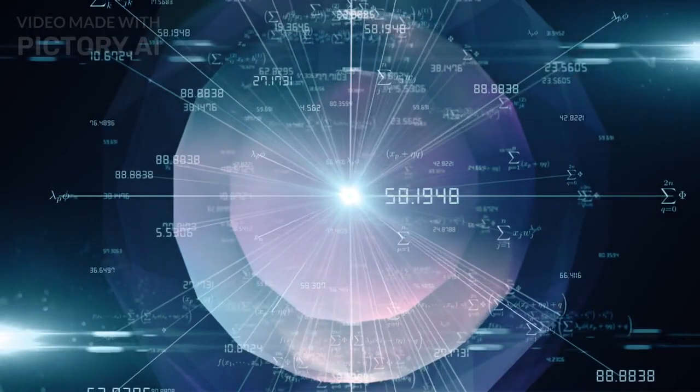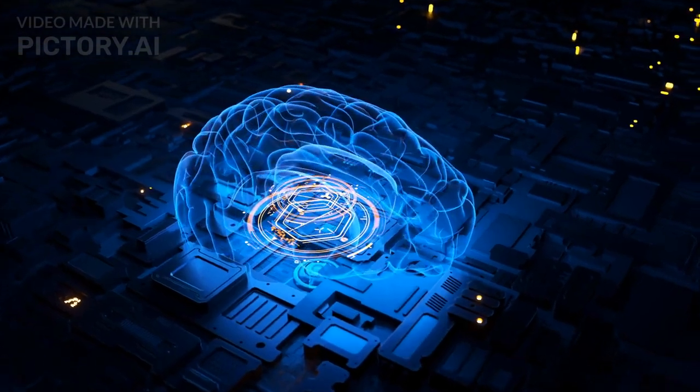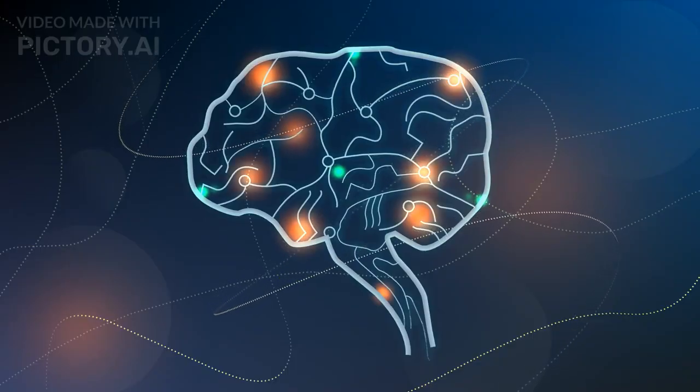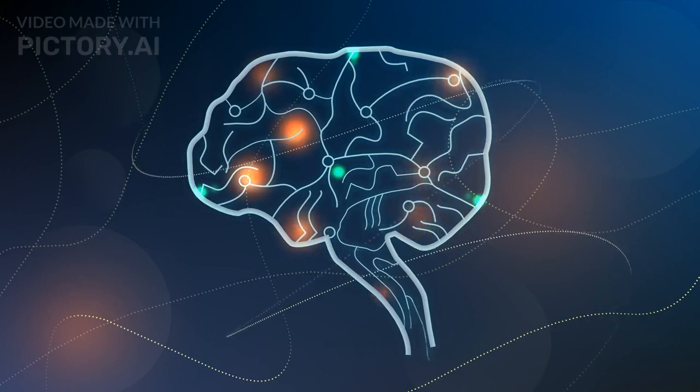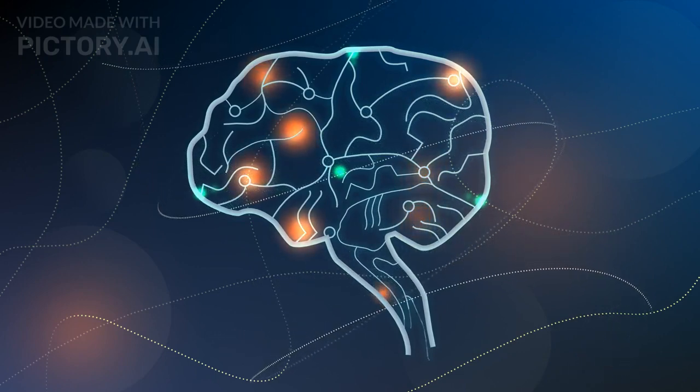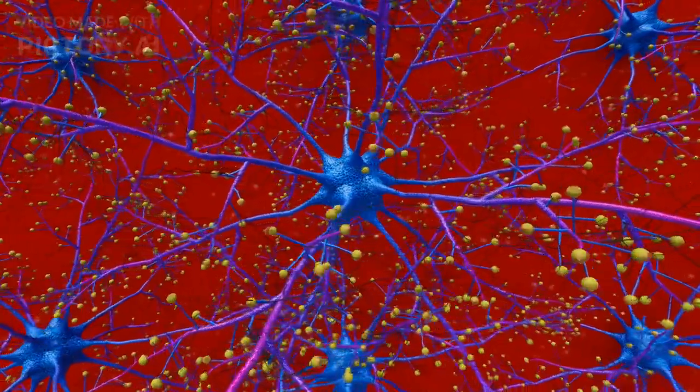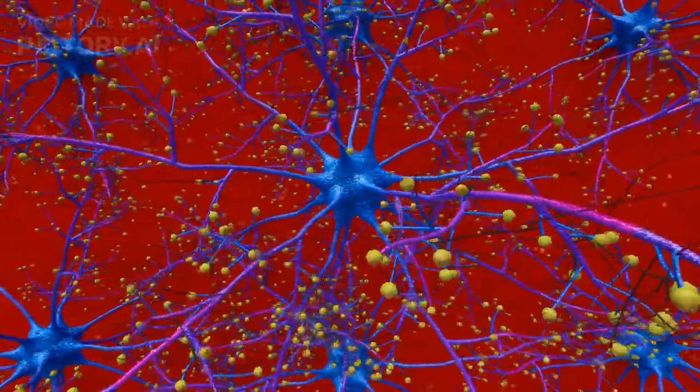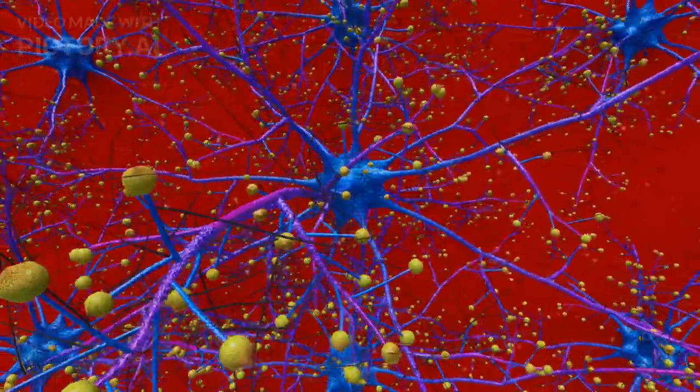Neural networks. A key component of machine learning is neural networks. These are structures inspired by the human brain, consisting of interconnected nodes, or neurons, that process information. Neural networks excel at tasks like image and speech recognition, language translation, and more.